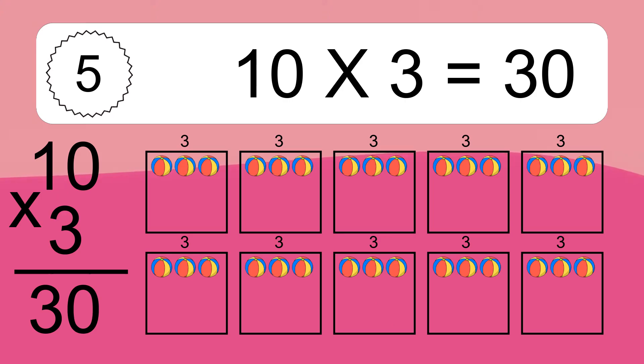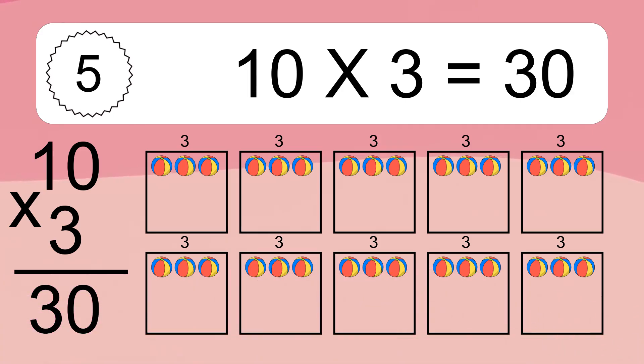10 times 3 equals what? We have 10 boxes and each box has 3 colorful balls inside. If you count all the balls in all the boxes together, you will have 10 times 3 balls. This equals 30 balls.